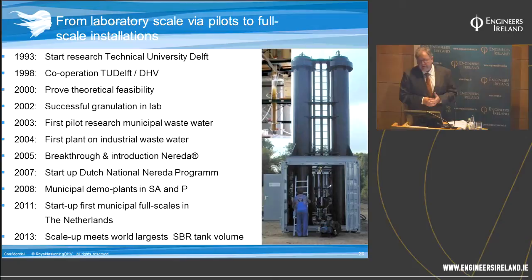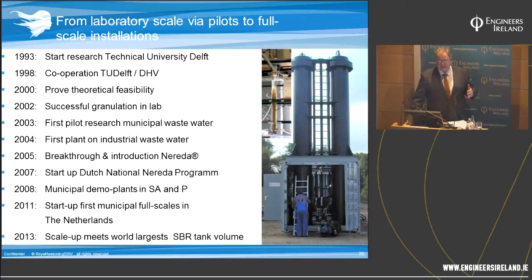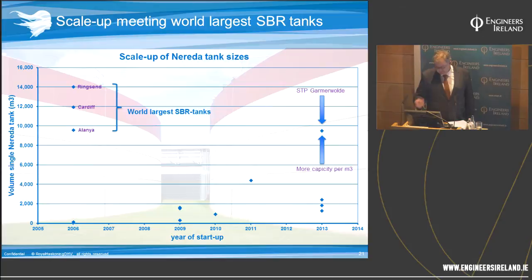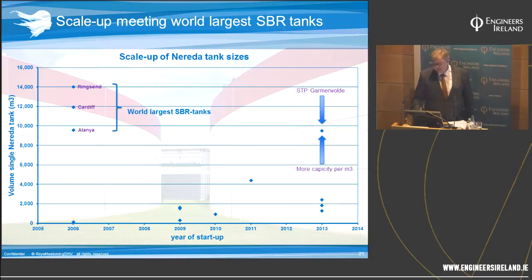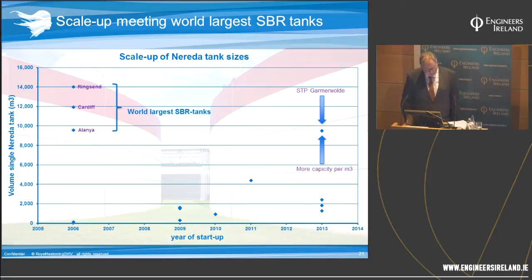The timeline shows research starting in 1993, and by 2013 the technology is not only at full scale but in the same dimensions as the largest SBRs in the world — 20 years from research to implementation. Comparing reactor sizes over time, the world's largest SBR tanks in the early 2000s are those here in Dublin at the Ringsend Wastewater Treatment Plant. The Garmerwalde development takes us up to 9,000 cubic metres per cell, bringing us into the region of Alanya and Cardiff in scale.